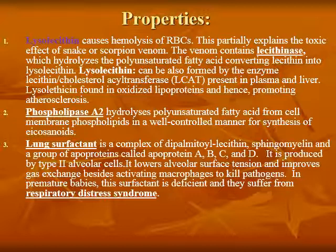Lung surfactant is a complex of dipalmitoyl lecithin, sphingomyelin, and a group of lipid proteins called apoprotein A, B, C, and D. It is produced by type 2 alveolar cells, lines the alveolar surface, and improves gas exchange besides activating macrophages to kill pathogens. In premature babies, this surfactant is deficient and they suffer from respiratory distress syndrome.